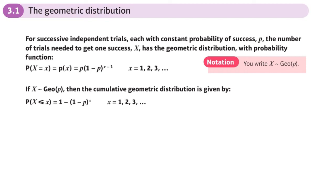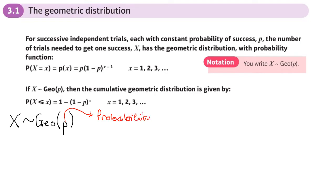This is the geometric distribution. Just like all our other distributions, X is our random variable which is geometrically distributed, and the only parameter is P, which stands for the probability of success. It differs from the binomial distribution in that there is not a fixed number of trials — we stop when success occurs. It may be that we want success to occur on the second, third, or fifth trial.